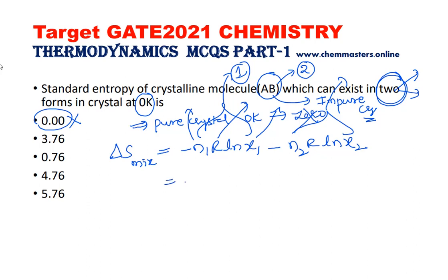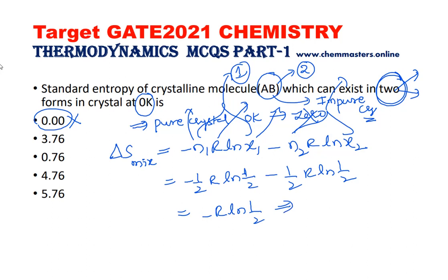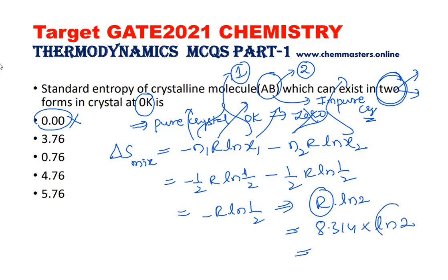Now substituting the values: −(1/2)R ln(1/2) − (1/2)R ln(1/2). Simplifying gives R ln 2. Substituting the value of the gas constant: 8.314 × ln 2, and substituting the value of ln 2, you get 5.76 J/mol as the correct answer.